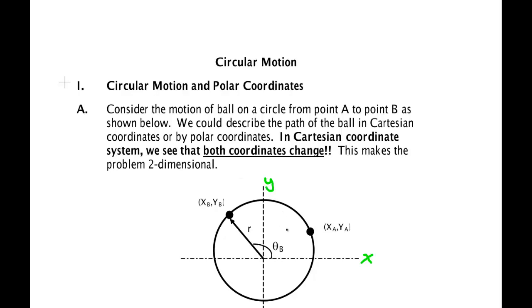Consider a runner or a ball on a hoop. If we wanted to describe that object, we could draw an arrow from the origin to a point — that would be its initial position, call that R sub A. That ball would have a certain value of X, so this would be X sub A, and it would have a certain Y coordinate, Y sub A. That is the way we have been describing things in Cartesian coordinates this semester.